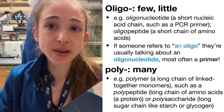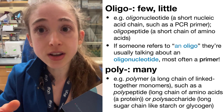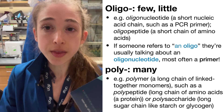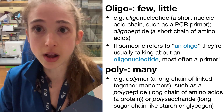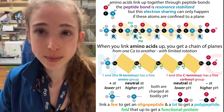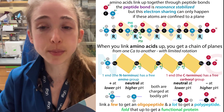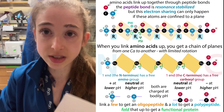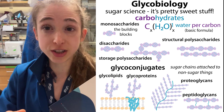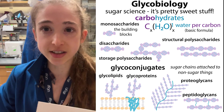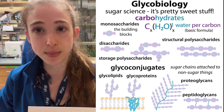Oligo basically just means few or little. We can stick oligo in front of other types of building blocks to talk about other short little molecules, such as oligopeptides, which are short chains of amino acids — the building blocks of proteins. We can also talk about oligosaccharides, which are short sugar chains, such as the glycans that are attached to various proteins and lipids.